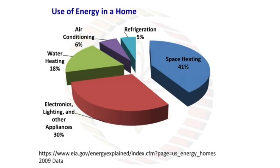For energy use in the home, the most energy is consumed in space heating at 41%, followed by water heating at 18%, electronics, lighting and other appliances at 30%, air conditioning at 6%, and refrigeration at 5%.